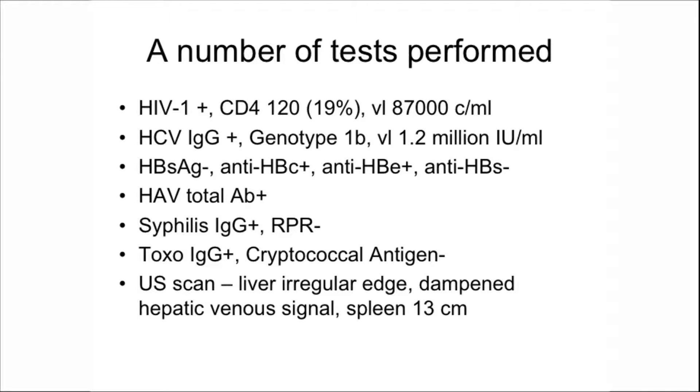He also had an ultrasound scan which showed a liver with an irregular edge, dampened hepatic venous signal, and a spleen of 13 centimetres. With all these baseline results, there was a knee-jerk referral to the HIV-hepatitis co-infection service to manage this patient.